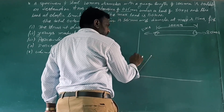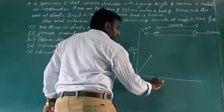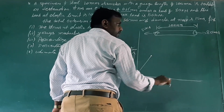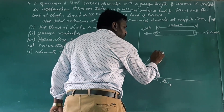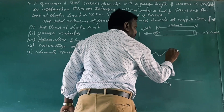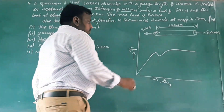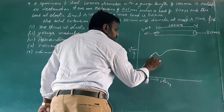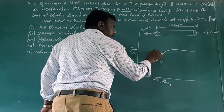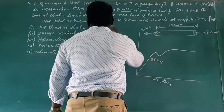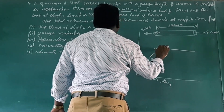On the stress-strain graph, we have: the proportional limit, the elastic limit, the upper yield point, the lower yield point, and the ultimate point. The upper yield point load is 102 kilonewtons. The lower yield point load is approximately 30 kilonewtons.